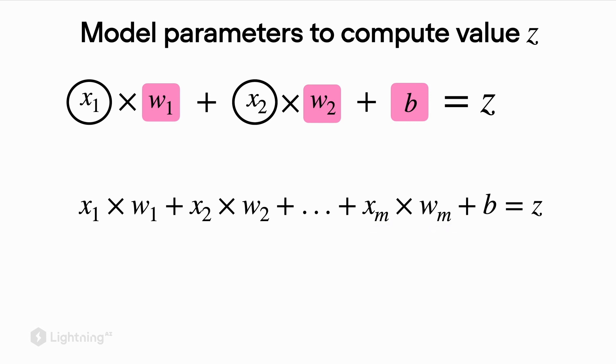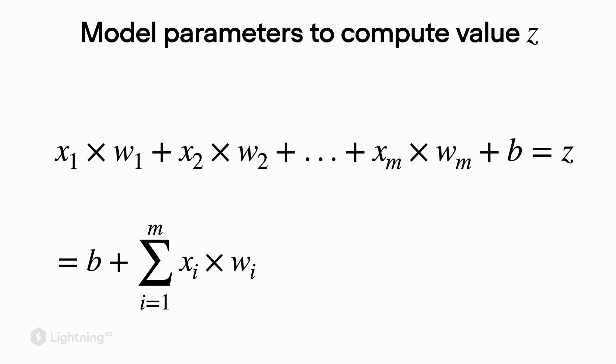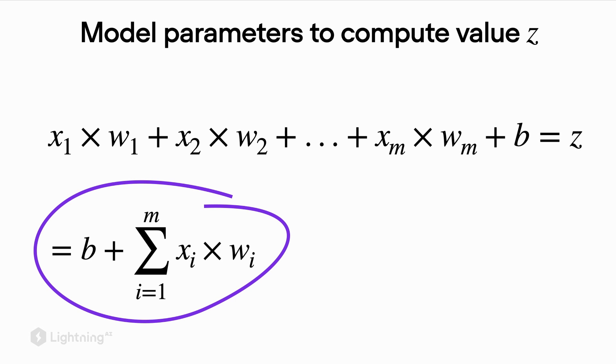And because this becomes unwieldy pretty quick, we often in machine learning make use of more compact notation. So in this case here at the bottom, you see the compact mathematical formula for expressing the sum above. So let's zoom in now and just briefly talk about how this equation works because we will use that a lot in this course. So here we have this symbol in the center, which is a sum symbol. And for that sum symbol, we have an index i equals 1. That's the index where we start counting. And we have this m here, where we stop counting. And for each value between i and m, or 1 and m, we do this multiplication between the input and the weight value. And once this is completed, we add this value b, the bias unit to it. So here really this equation represents a more compact notation of the summation that we have here more explicitly.